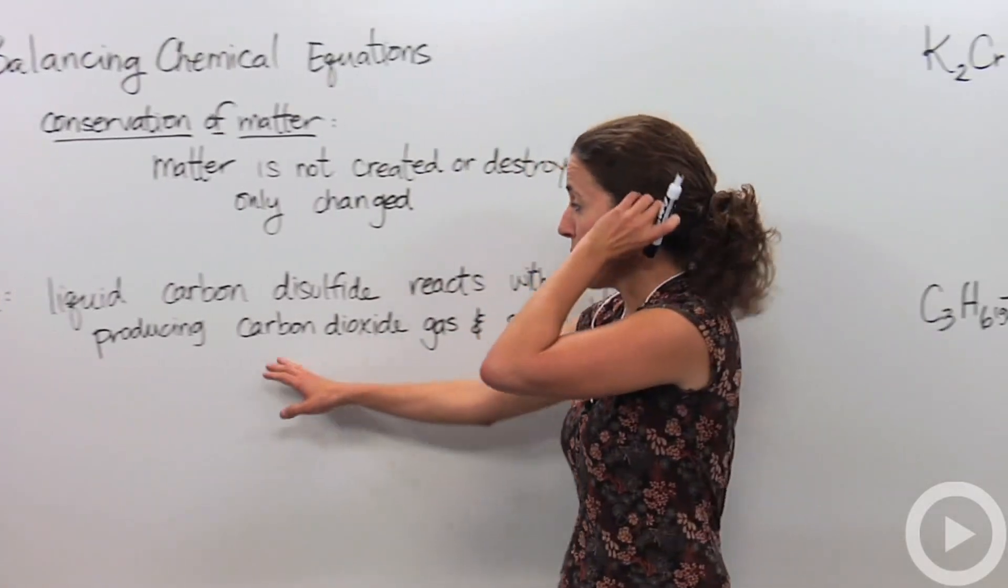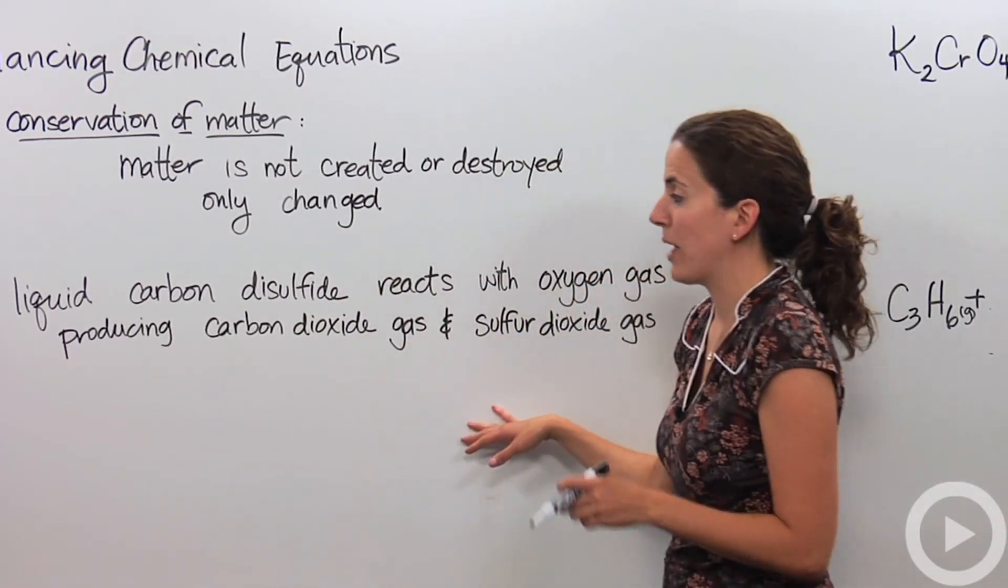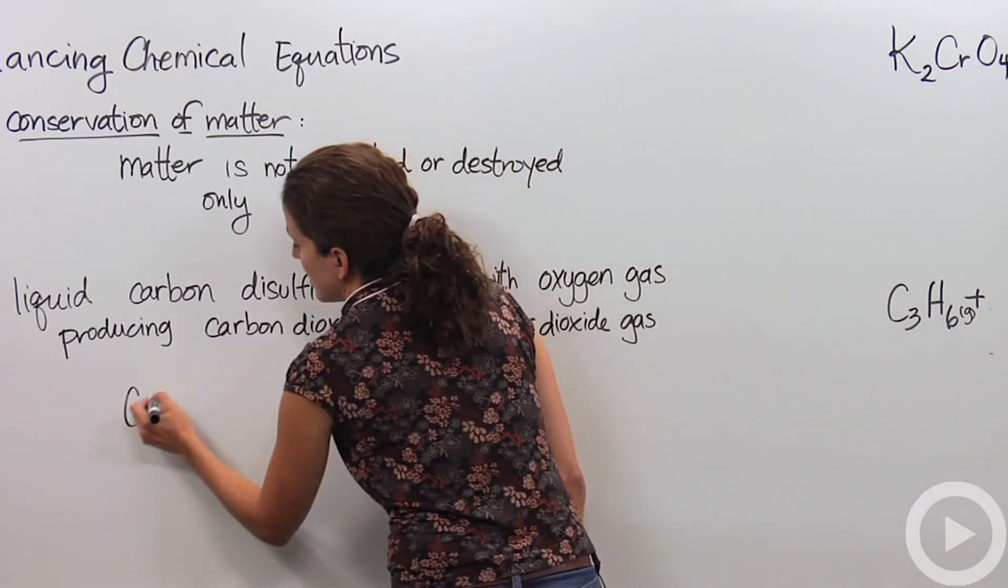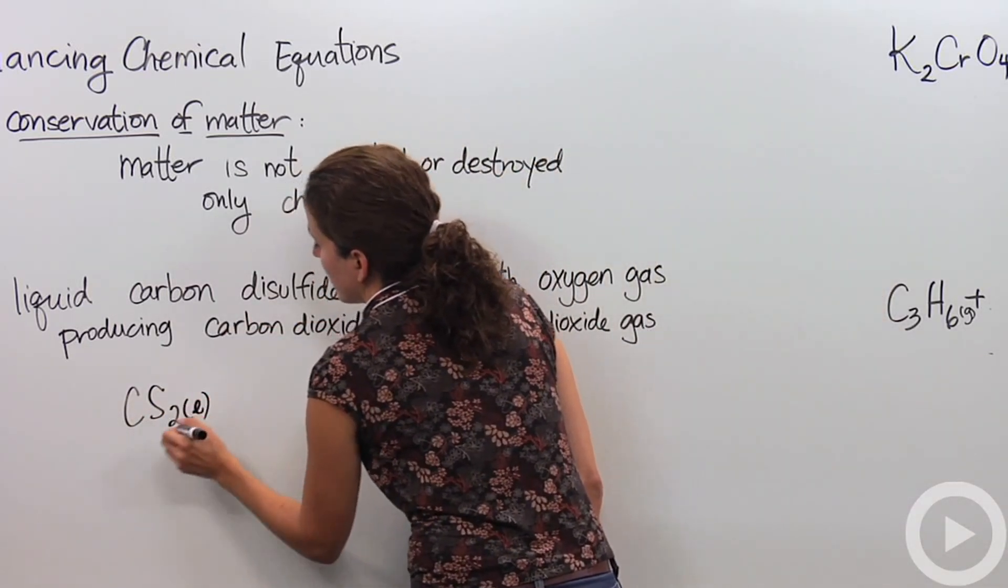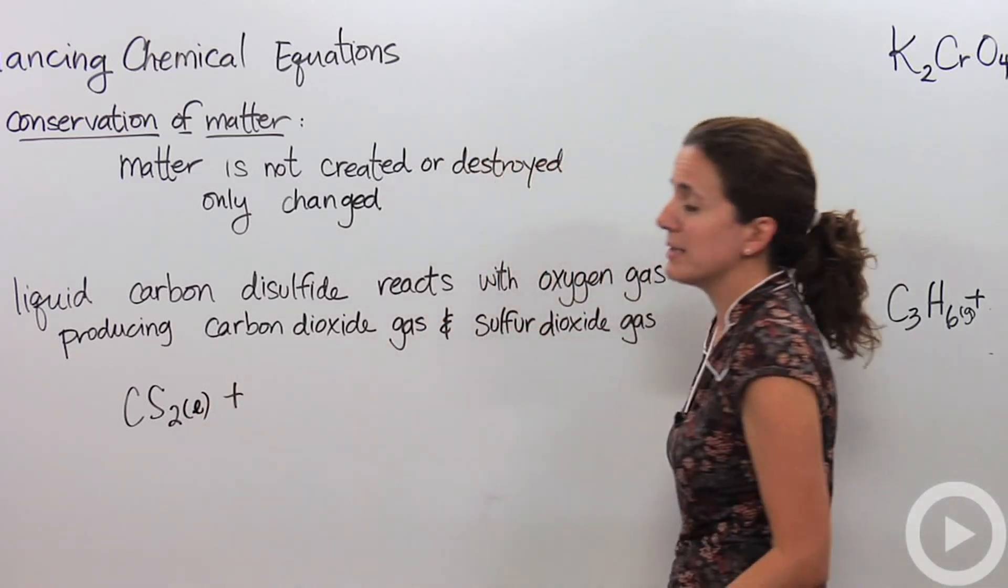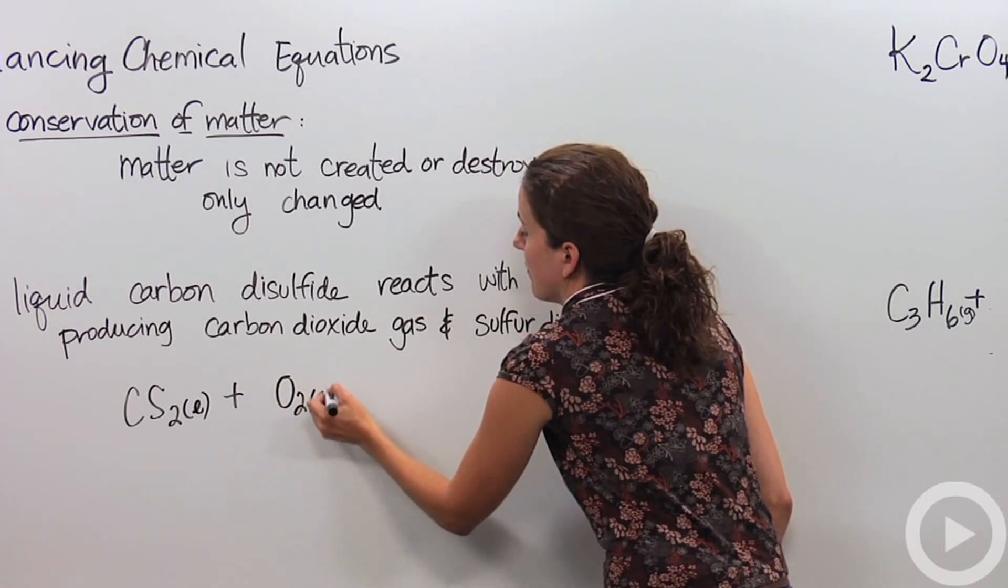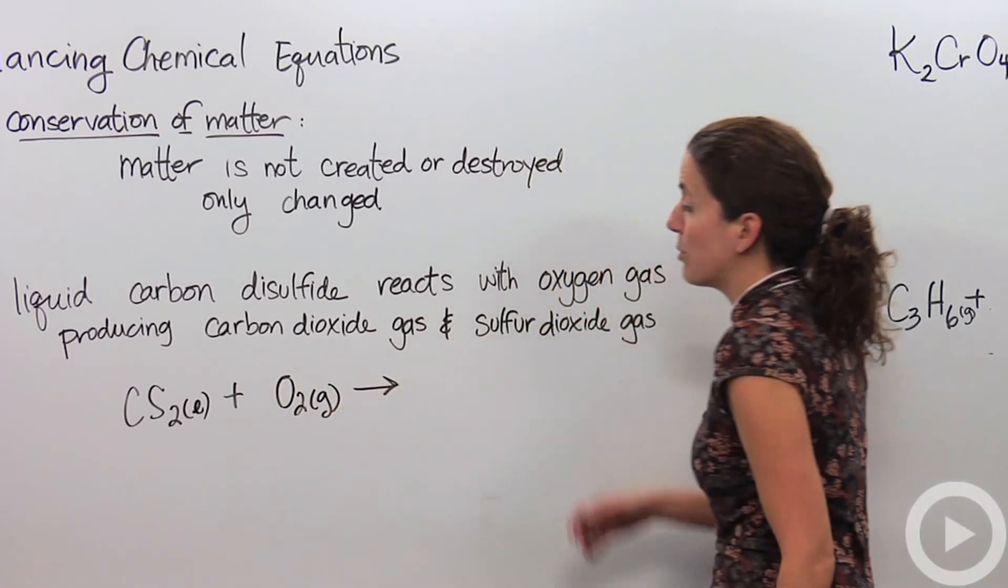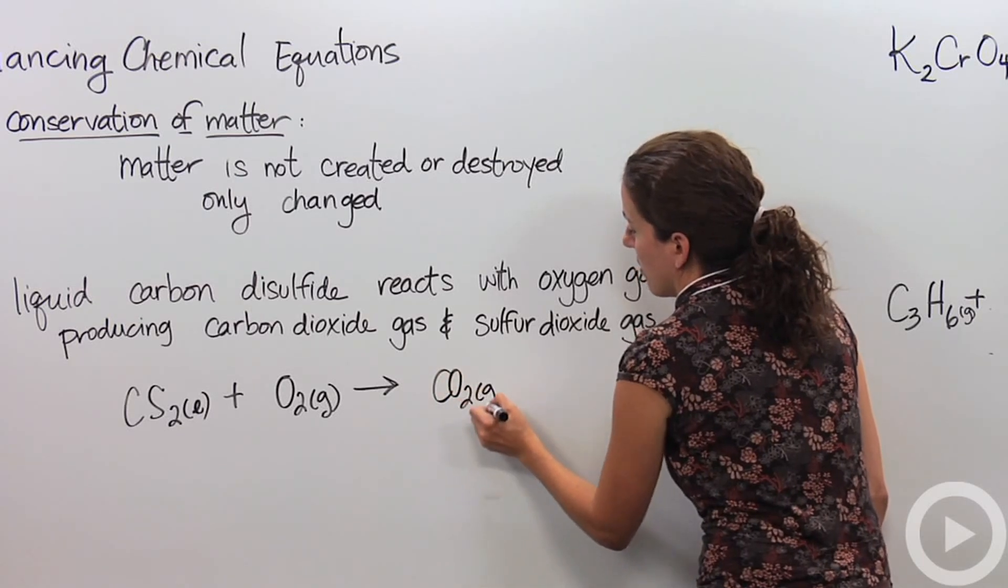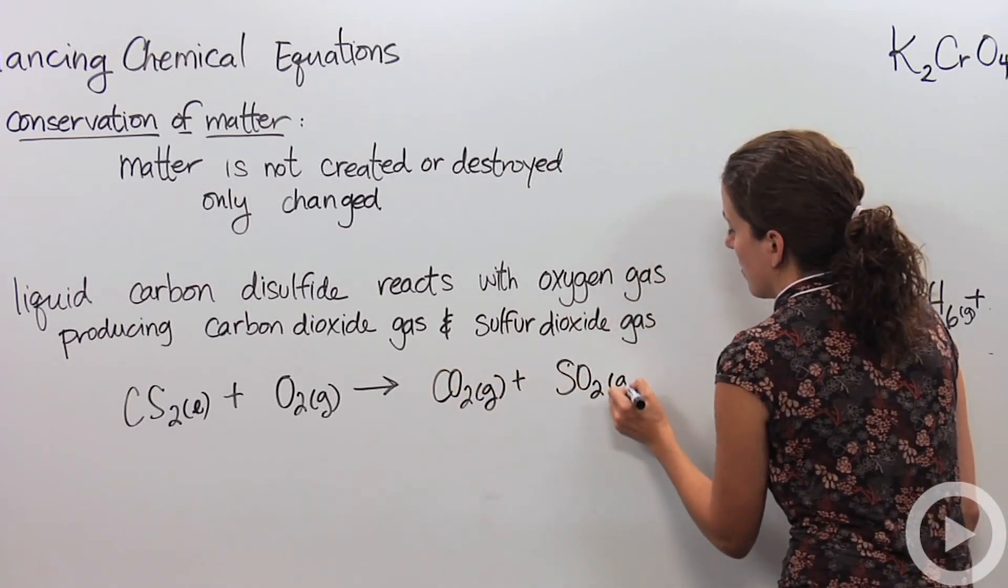Let's deal with this. We have this written chemical equation, and I'm going to put that into a skeletal equation or the actual chemicals. So we have liquid carbon disulfide, CS2, it's a liquid so we have to denote that. Reacts with oxygen gas, and oxygen gas is one of our diatomics, so we're going to say it's O2, and it's a gas. Yields or produces carbon dioxide gas and sulfur dioxide gas.